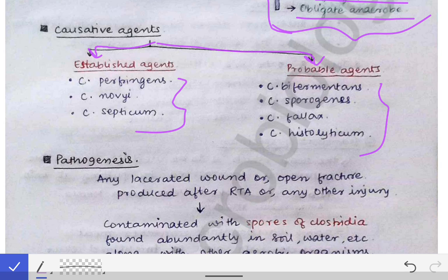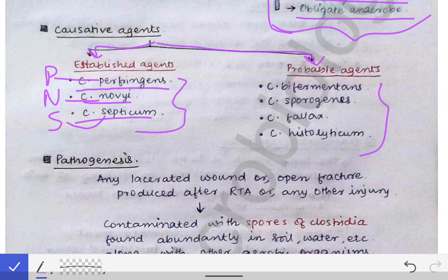The established agents are Clostridium perfringens, Clostridium novyi, and Clostridium septicum. You can remember these with the mnemonic PNS — P for perfringens, N for novyi, and S for septicum. PNS also stands for paranasal sinuses, which are present in every person, so similarly these PNS organisms are present in all cases of gas gangrene.